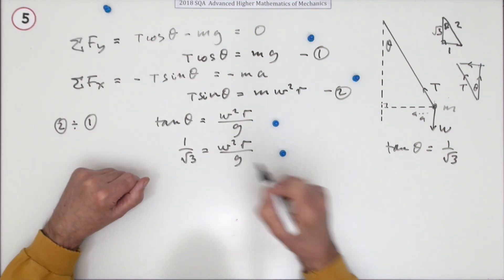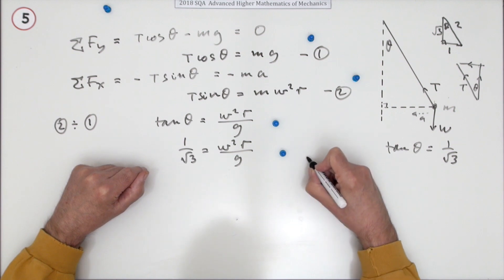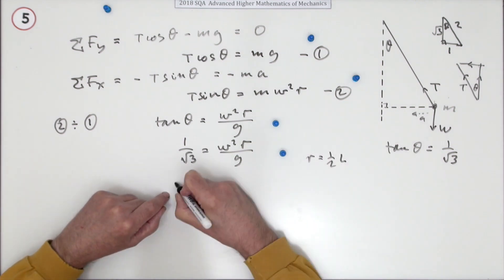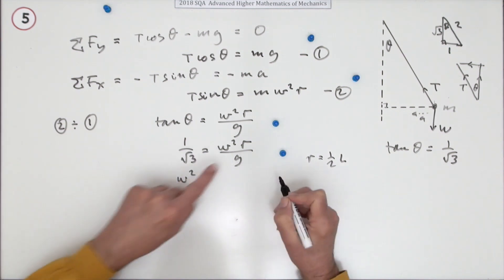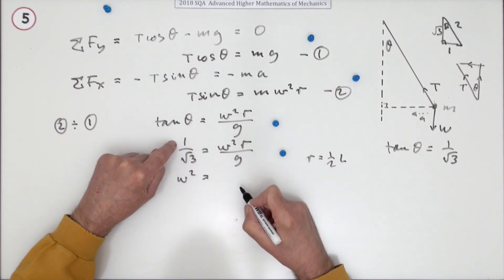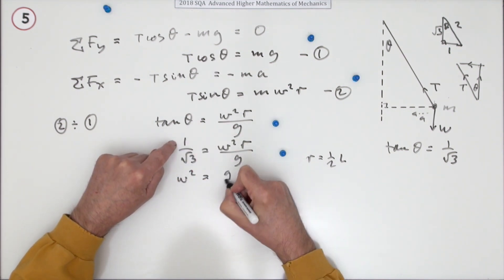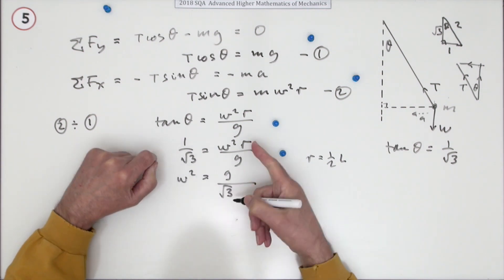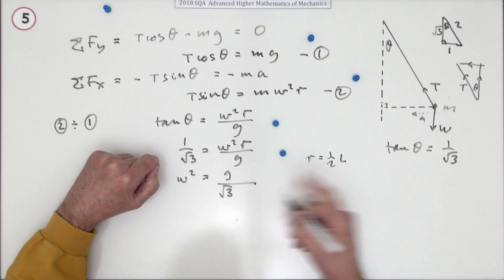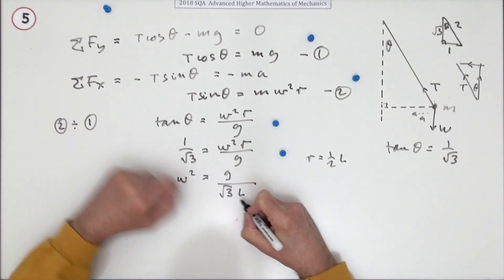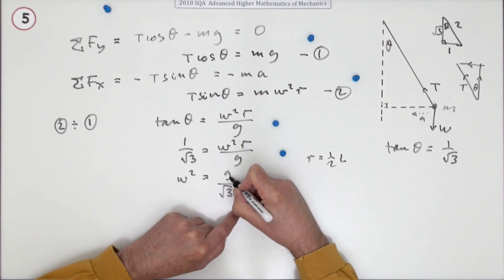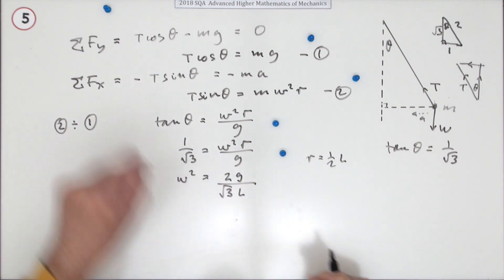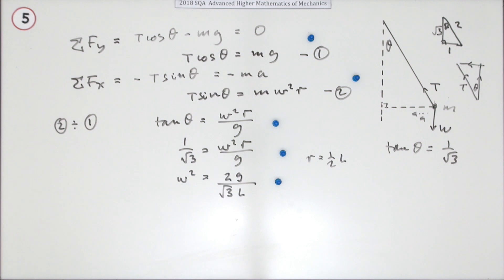Now the only thing left is to rearrange that, remembering that r = L/2. So ω²r equals g over √3 — then g goes on top, √3 stays underneath, r goes underneath. Since r = L/2, the 2 goes on top: ω² = 2g / (√3 · L). That's the final mark.